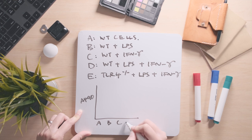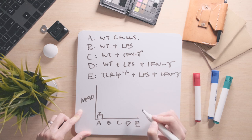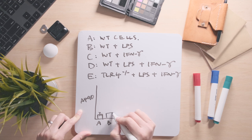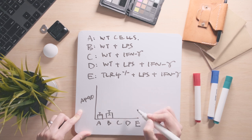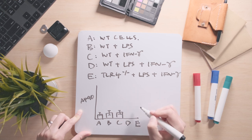We can then generate results that highlight the nitrite concentration in each condition. In sample A, we should see a negligible baseline level of nitrite as there are no priming signals or PAMPs. In sample B, we expose wild-type cells to LPS but there is no priming signal added, so any production of nitric oxide will be hampered by the absence of priming signals which bolster iNOS expression. In sample C, we add interferon gamma, but this time there is no PAMP to recognize.